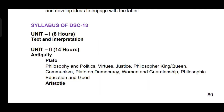Let's break down each unit for better understanding. Unit 1 is Text and Interpretation, which focuses on the relationship between history and political theory. It explores how we interpret texts and understand their political implications.